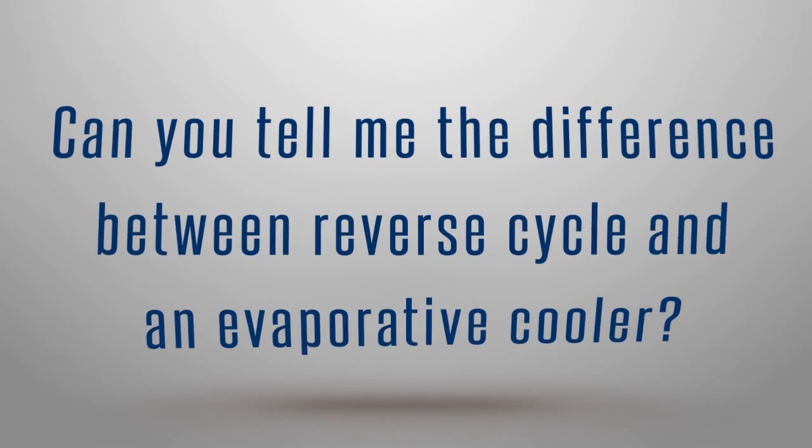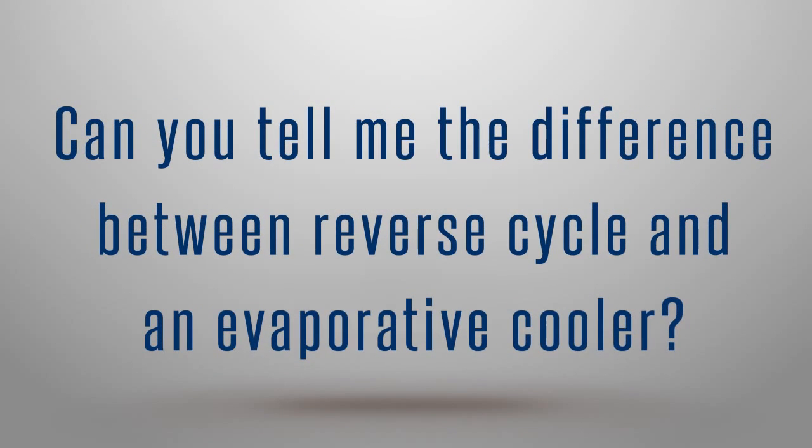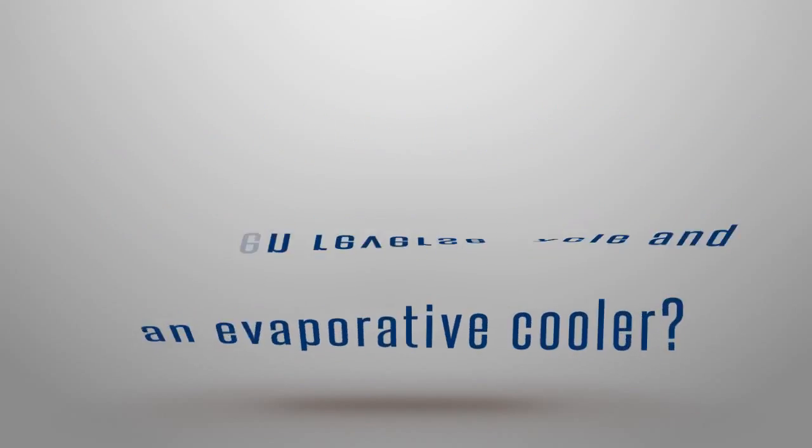Can you tell me the difference between a reverse cycle air conditioner and an evaporative cooler? Reverse cycle air conditioning has got a compressor outside and a fan coil inside. We're cooling or heating refrigerant and passing that up through copper pipes up into a coil.